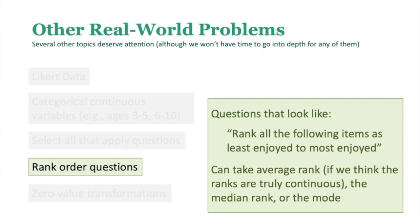Rank order questions ask participants to rank items from least to most enjoyed, for example. With three items, participants assign ranks 1, 2, 3 across the items. These aren't often analyzed in a regression framework — usually you just report the average rank, median rank, or mode for each item. Technically they could be used in a regression as a predictor or outcome, but it would need to be seriously thought through whether to treat them as continuous or not.